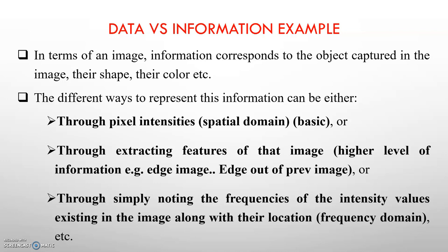There are different ways to represent that information. The first is the most common and basic one, which we do in the spatial domain: through pixel intensities. An image is simply a 2D array. For a grayscale image, the cells will have a value from 0 to 255. Any image can be represented through pixel intensities — if I want a grayscale image, I have an array of M×N and by putting intensity values from 0 to 255, I can represent the information.